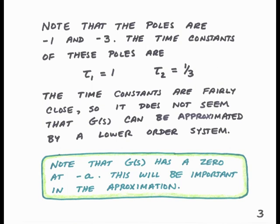First, note what the poles of this system are. We have one pole at minus 1 and another pole at minus 3. The time constants associated with these poles are τ₁ equal to 1 and τ₂ equal to one-third. These time constants are not so different from each other, so it doesn't seem like we can treat the slow dynamics as dominant — that is, we wouldn't be able to approximate the second-order system as a first-order system. However, we'll find out that in some cases we still can.